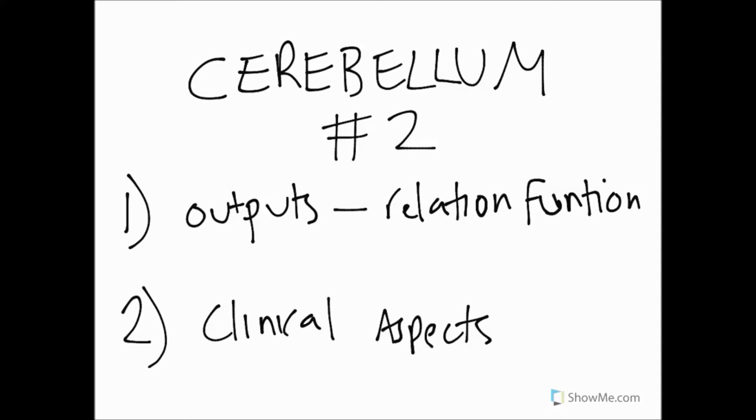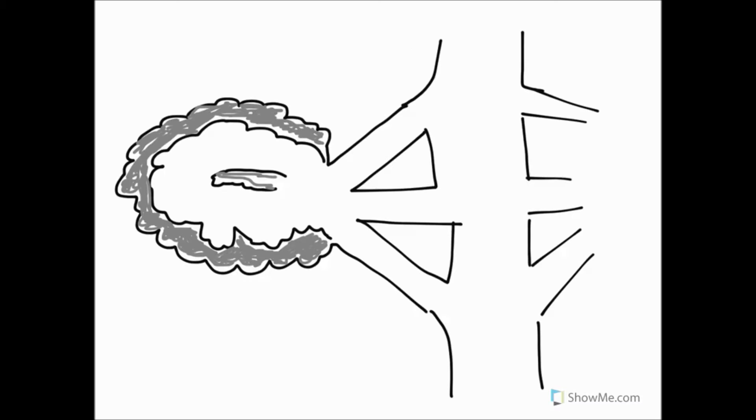In order to have a look at the outputs, we're going to go back to my diagram. Remember this is a posterior view of the cerebellum. You have to imagine that the cerebellar hemispheres have been splayed apart. We have the cerebellar cortex in grey, white matter inferior to that, and then the deep nuclei located in the middle with the black and grey inside the white matter.